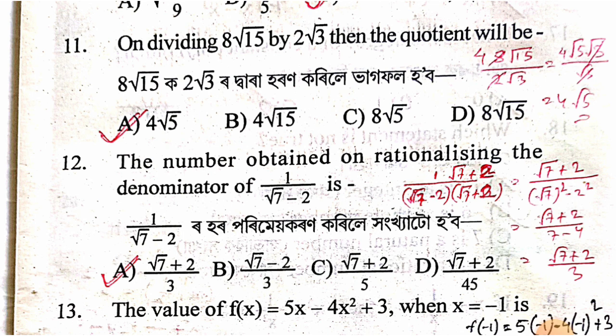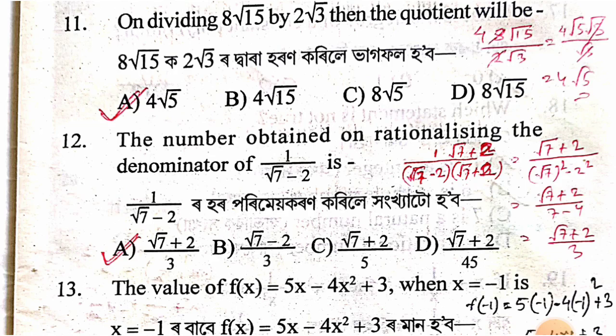On rationalizing the denominator of 1/(√7 − 2): multiply numerator and denominator by (√7 + 2). Using (a−b)(a+b) = a²−b², the denominator becomes 7 − 4 = 3. The rationalized form is (√7 + 2)/3.